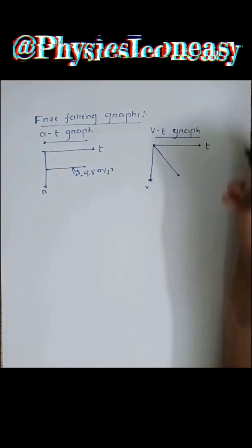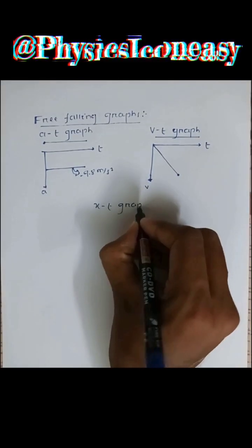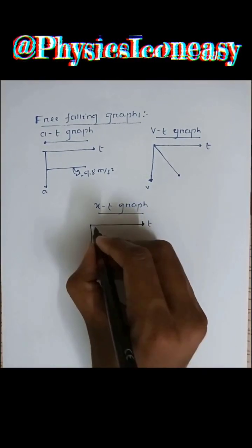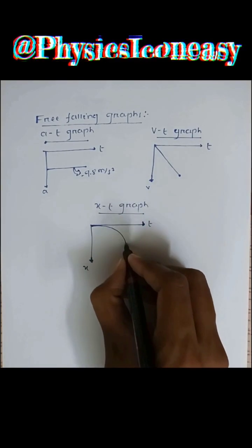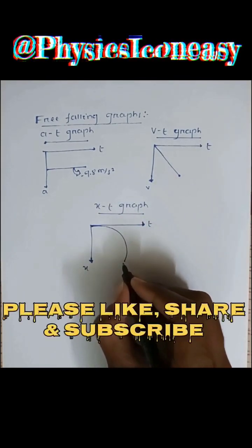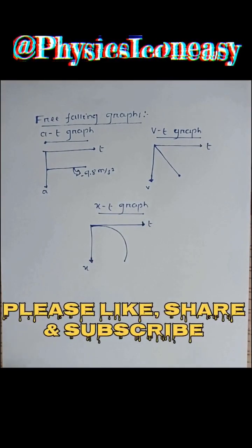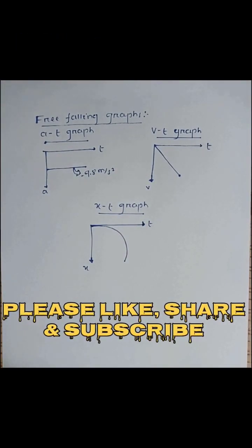The velocity-time graph gives a line passing through the origin. Similarly, the displacement-time graph gives a parabola. In this, we consider that acceleration, time, and displacement are all taken into account. Thank you.